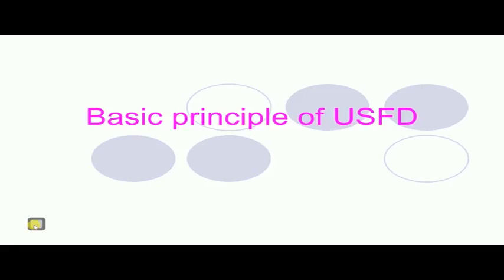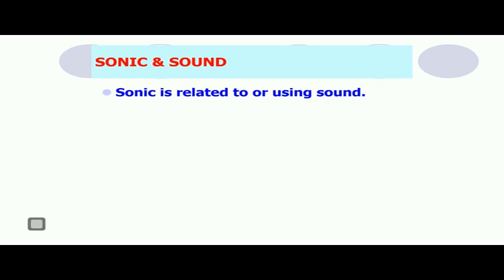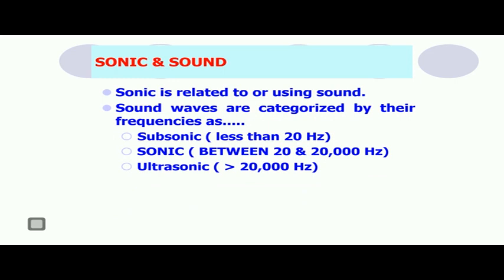The topic is basic principles of ultrasonic flaw detection. Ultrasonic flaw detection is based on sound waves. The word sonic is related to the use of sound. Sound waves are categorized by their frequencies as subsonic, sonic, and ultrasonic. Subsonic frequencies are less than 20 Hz. Sonic frequencies, which can be heard by humans, range from 20 Hz to 20 kHz, and frequencies above 20 kHz are called ultrasonic frequencies.